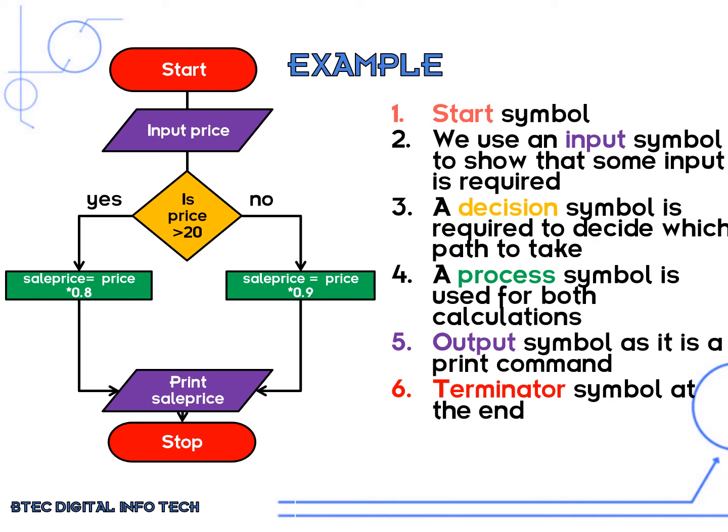Two different processes will take place. If the price is greater than 20 then we get a greater discount, and if it is less than 20 we get less of a discount. Once the process is complete we can output to the screen what their final sale price is with the discount.